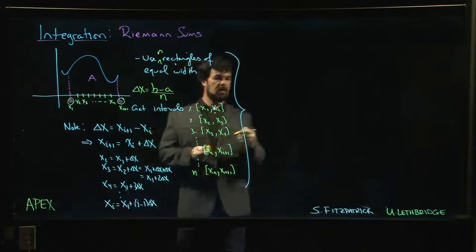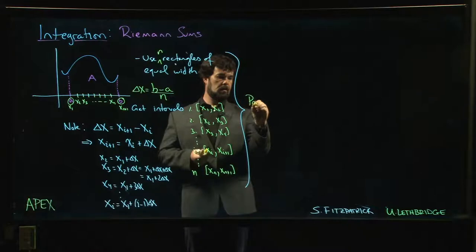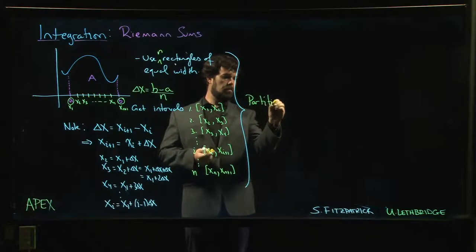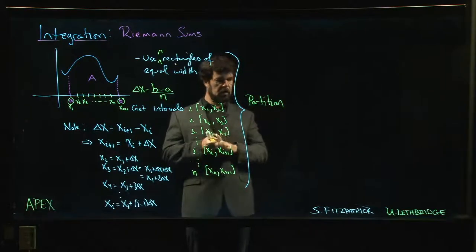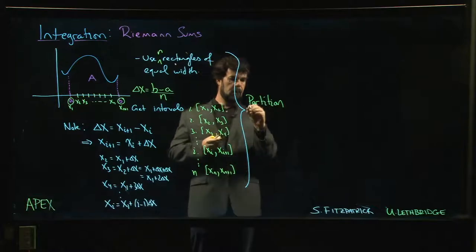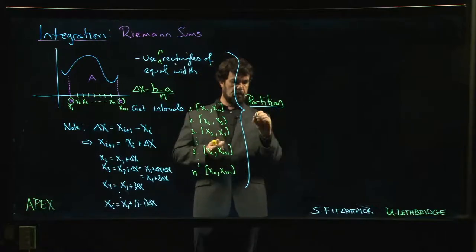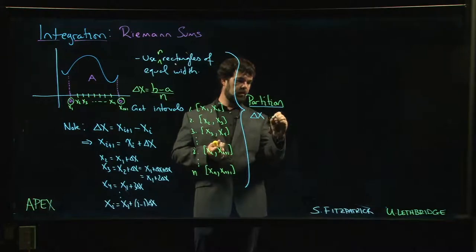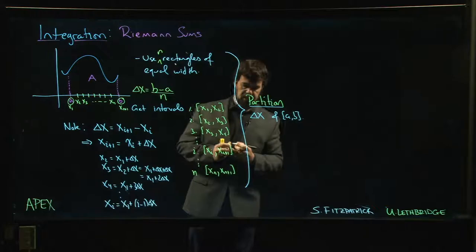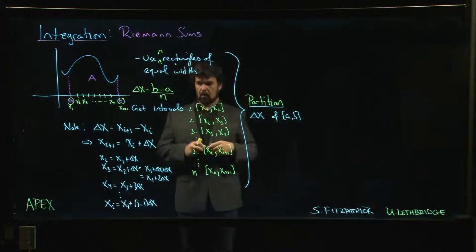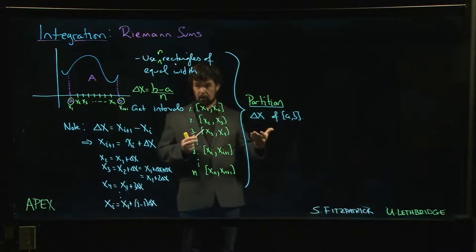This has a name - this is known as a partition. It's a partition, and we might give it a name, we might call it delta x of the interval from a to b.